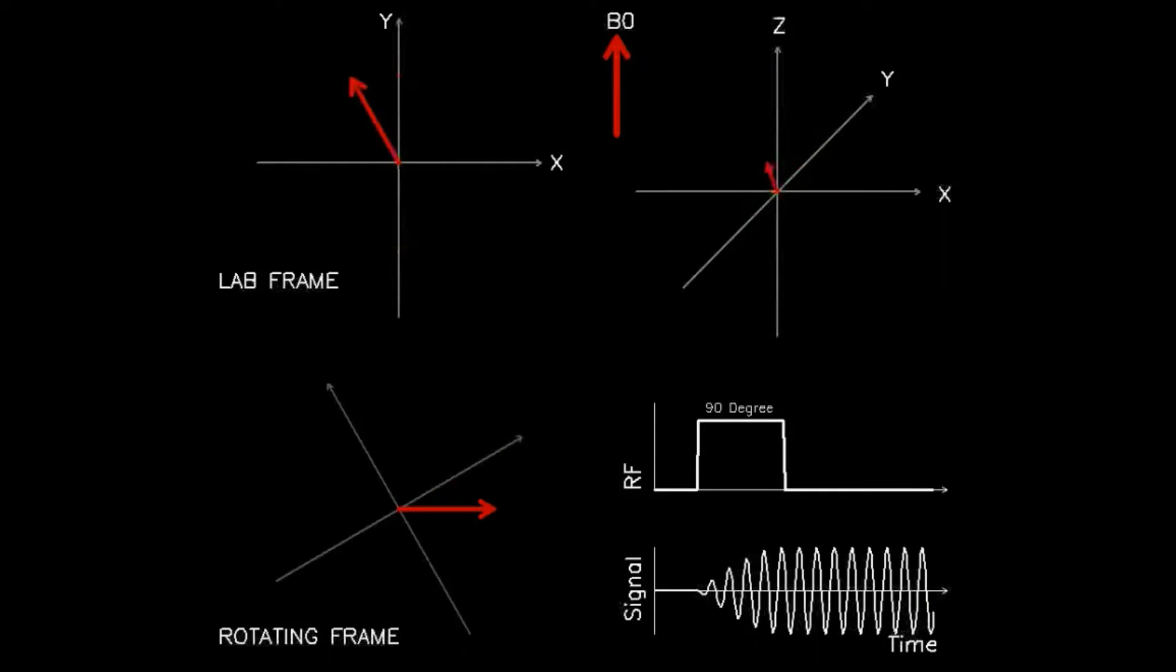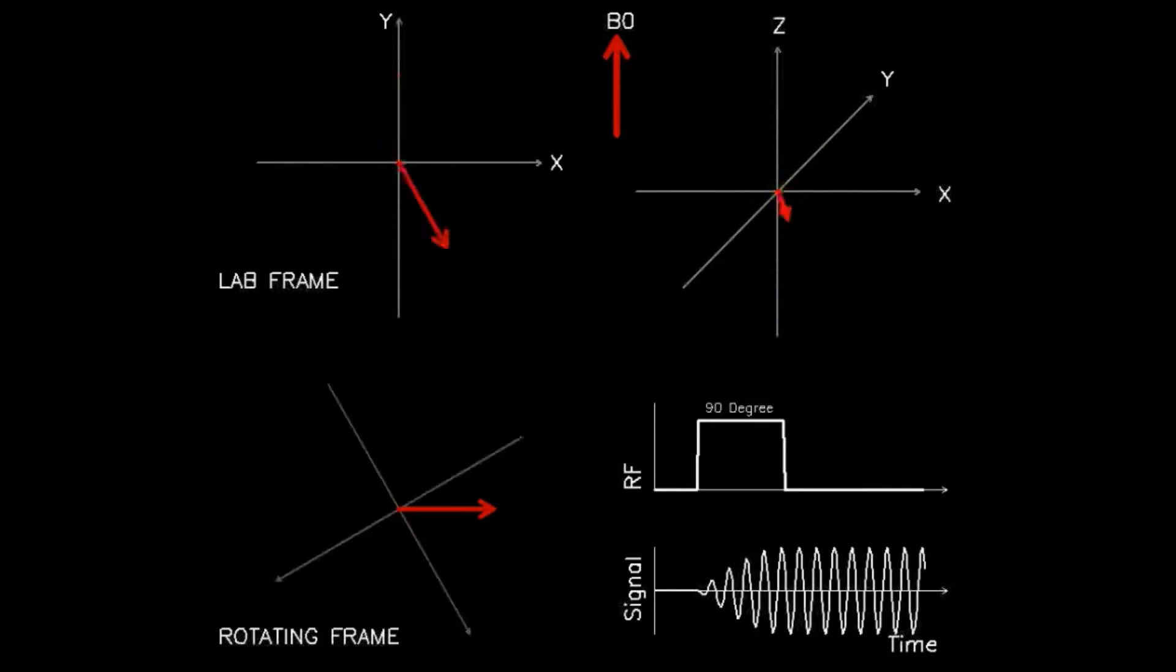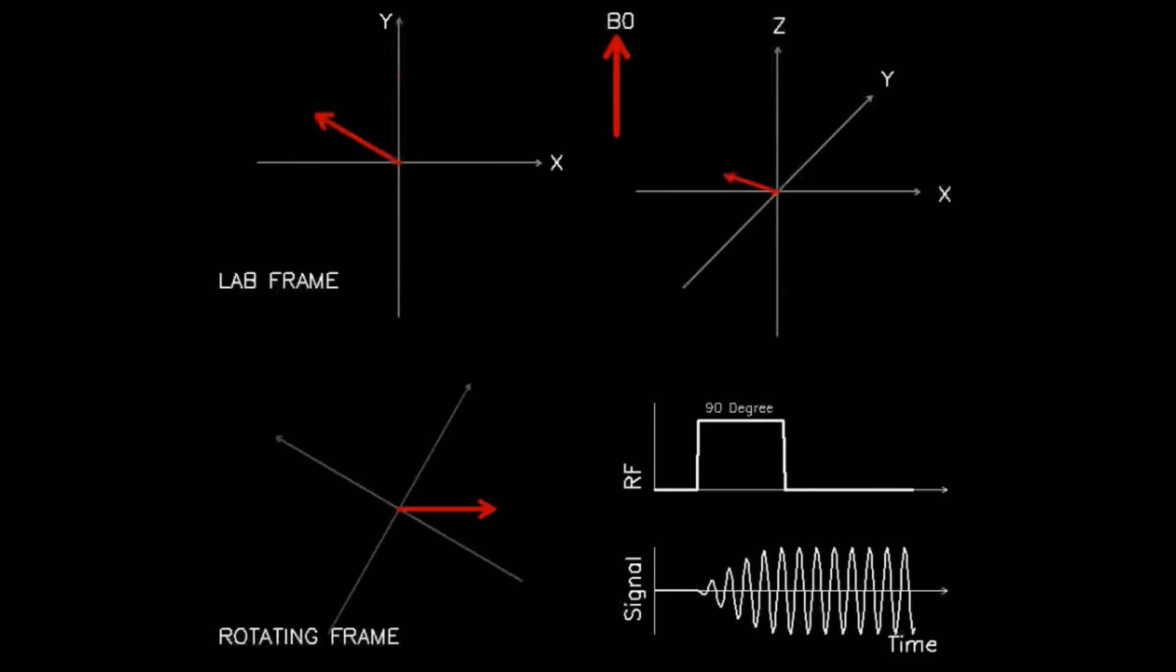Now, in the top left panel, the observer is positioned looking down the axis of the main magnetic field. Thus, the red arrow depicts the transverse component of the dipole vector projected in the x-y plane, as the radio frequency pulse deflects the rotating dipole axis away from the main magnetic field.